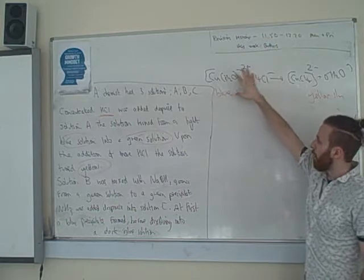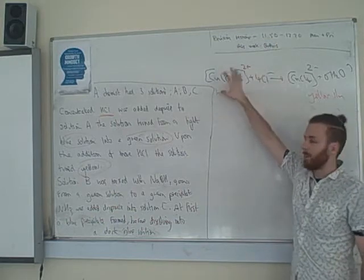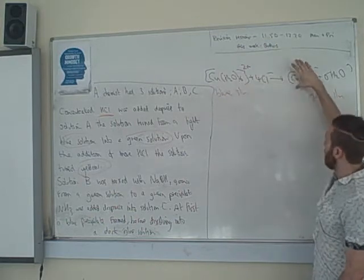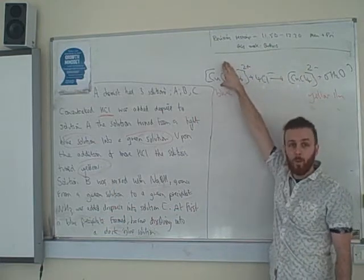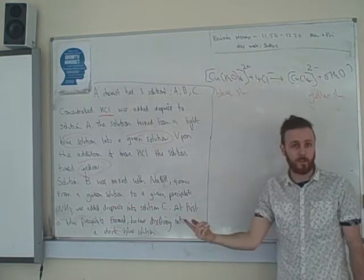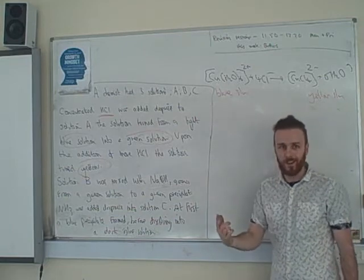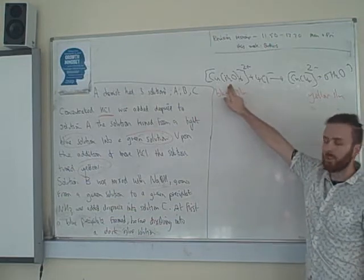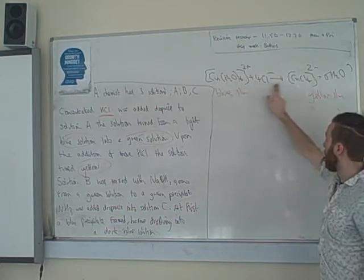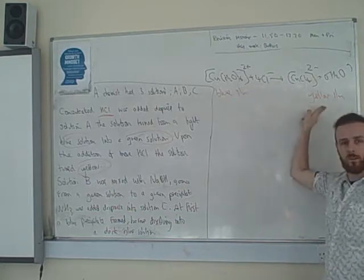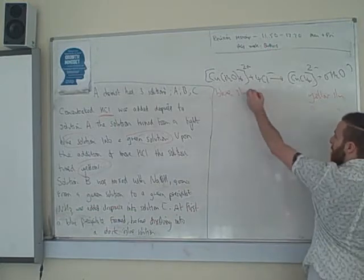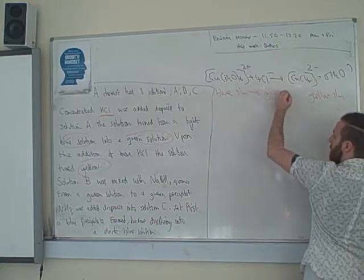Well what's happening here, it's just a little thing to watch out for, is when we first add our chloride we're not substituting all of this to give our yellow solution. Only some of the hexa aqua copper is reacting at first. And so at first we end up with a mixture of hexa aqua copper and copper chloride.